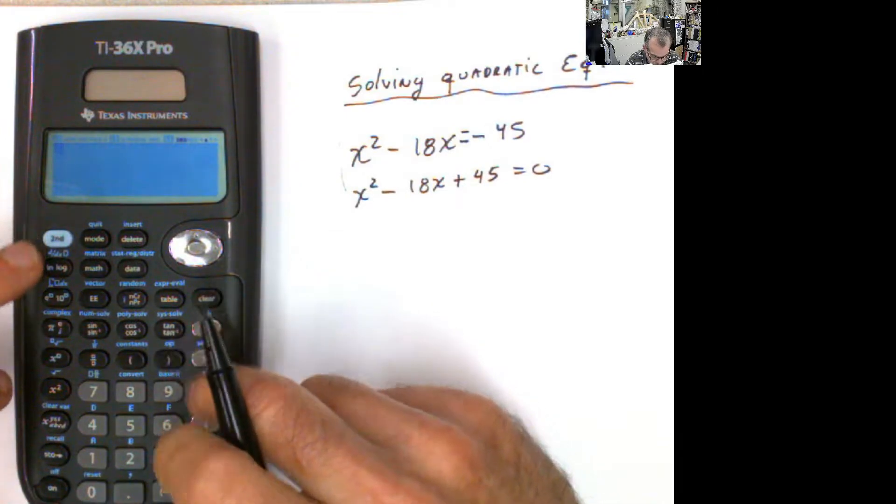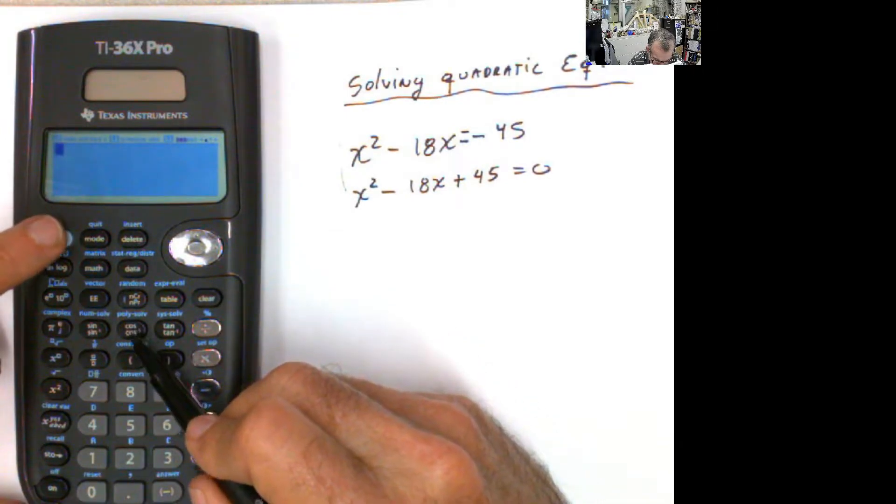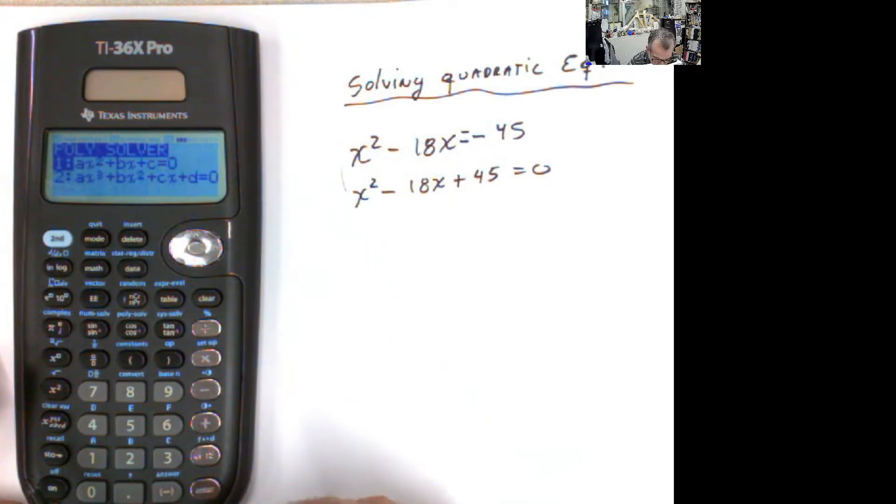Once you have that, you go here where it says polysolve, second polysolve, and then you select the quadratic equation.